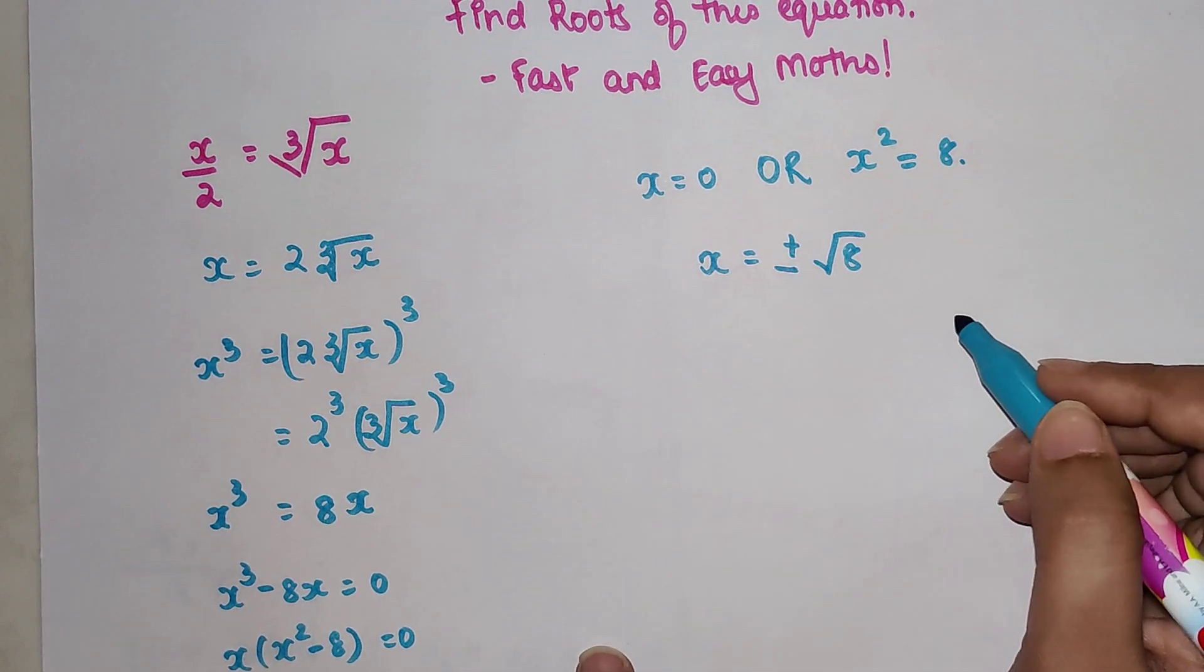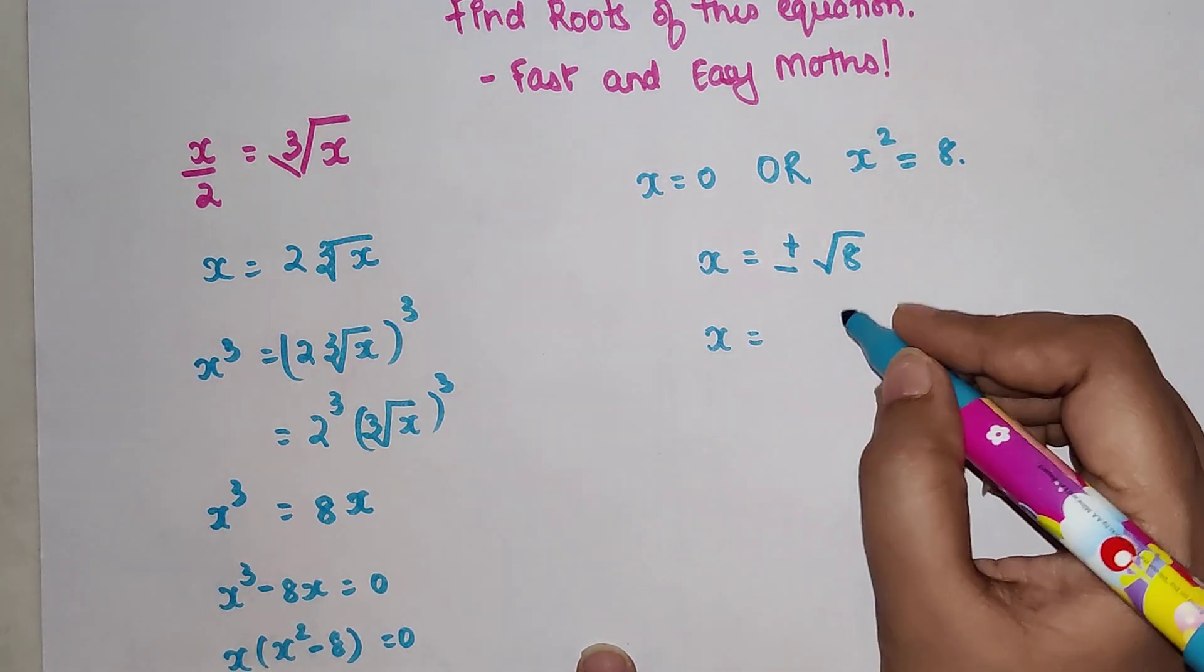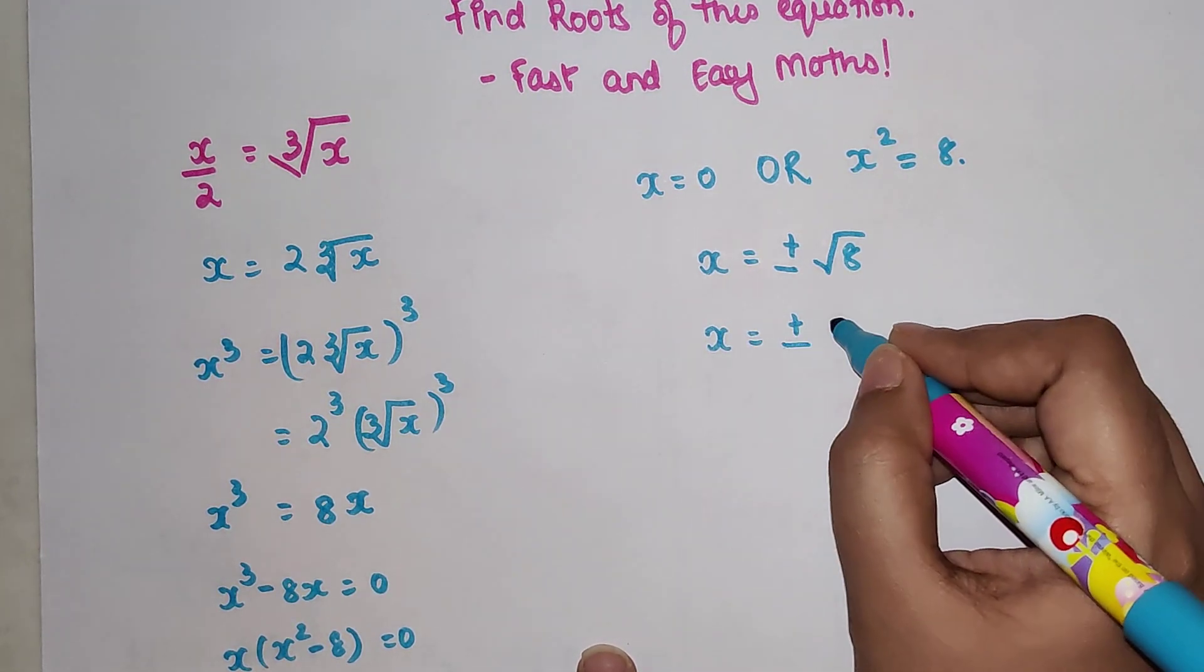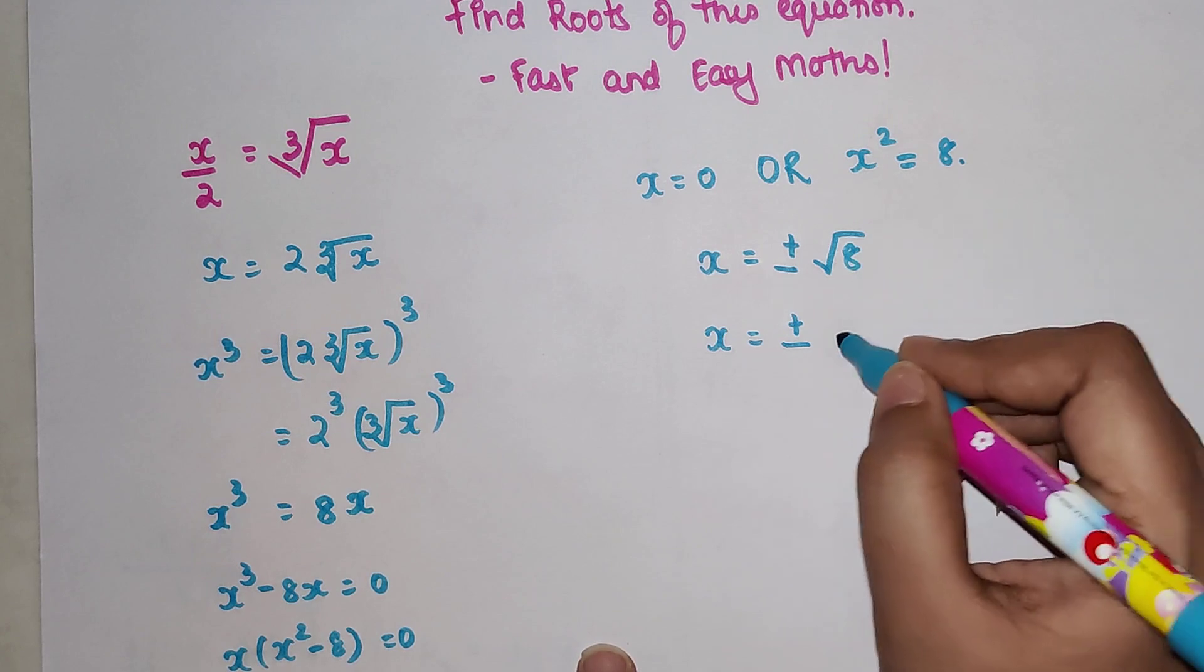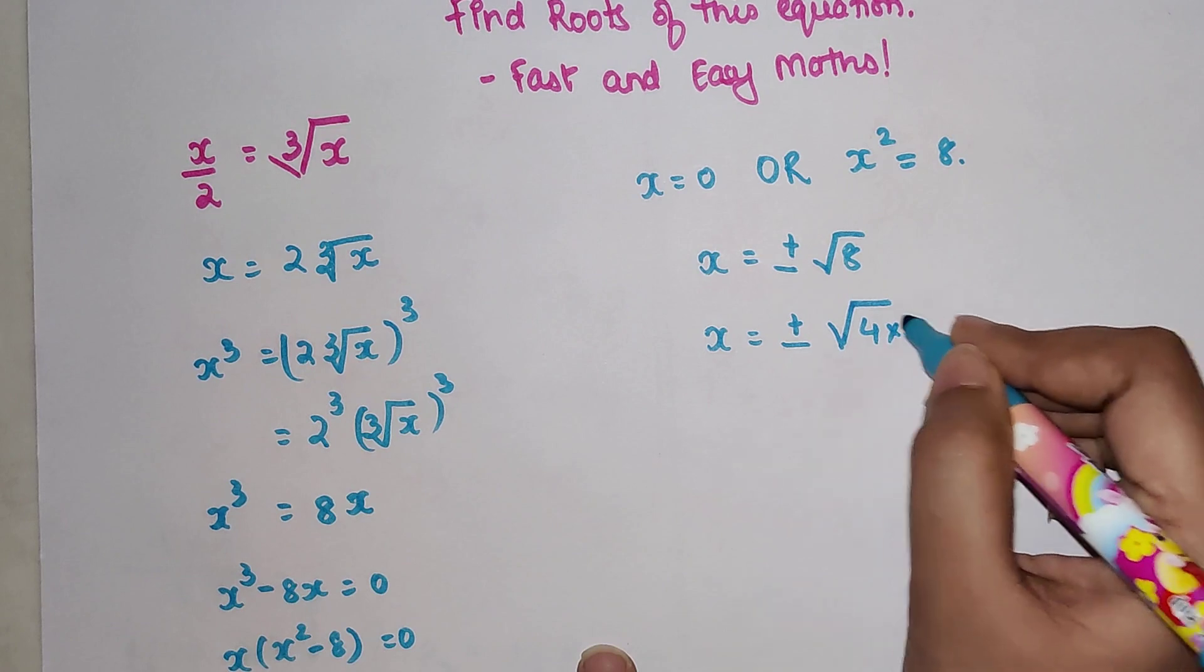So now you have x equals plus minus, this can be written as 4 times 2. So 4, when taken outside the square root, will get you 2 root 2.